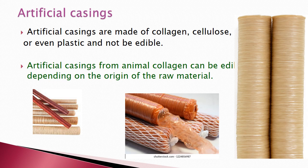Artificial casings are made of collagen, cellulose, or flexible plastic materials; they are not edible and are also called synthetic casings. However, synthetic casings made from animal-origin collagen can sometimes be edible depending on the origin and hygienic handling. These casings are available as compact dried sticks; to use them, pull out the needed length, dip in water so they absorb it and become soft and flexible, then use for sausage filling.